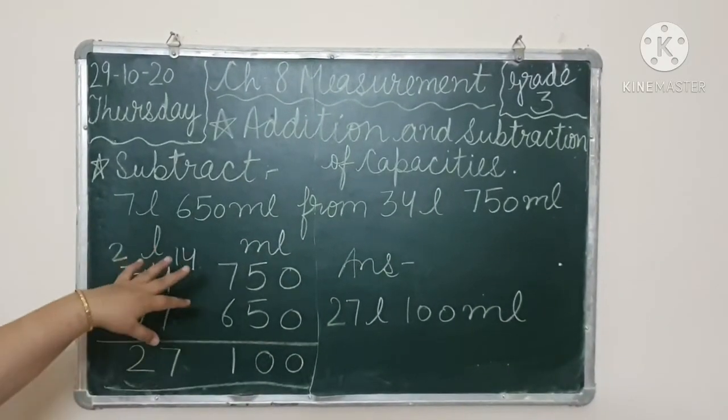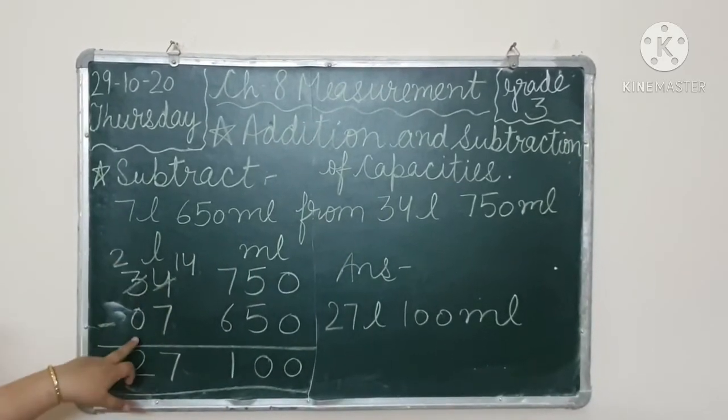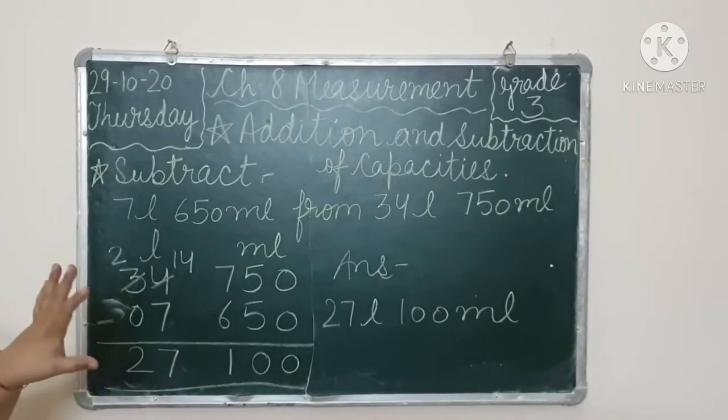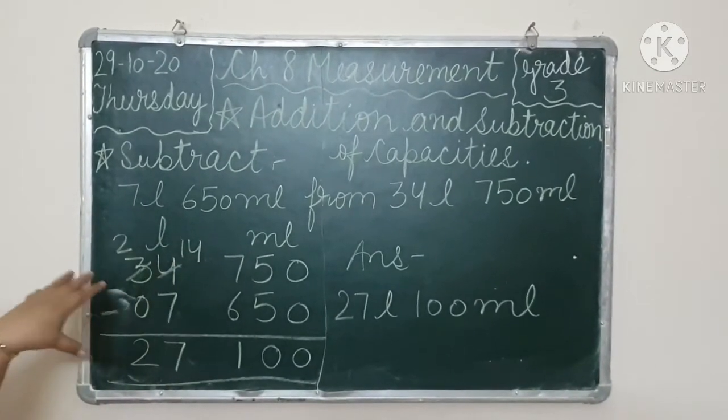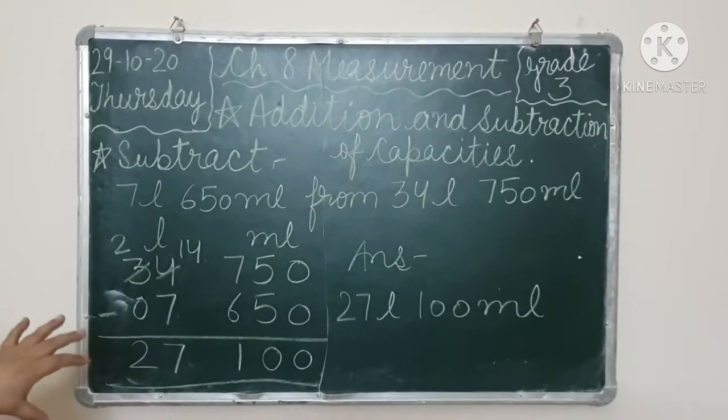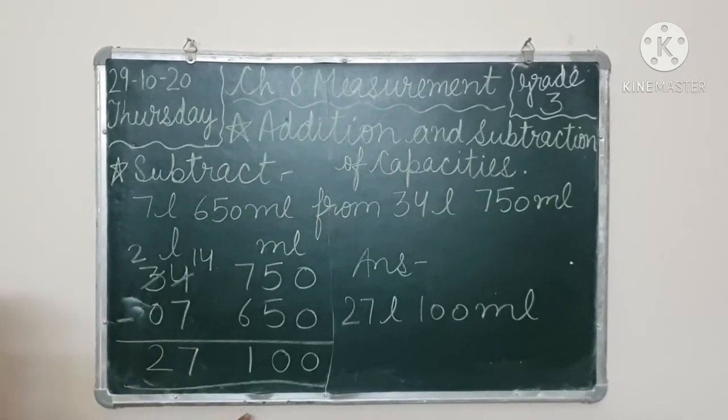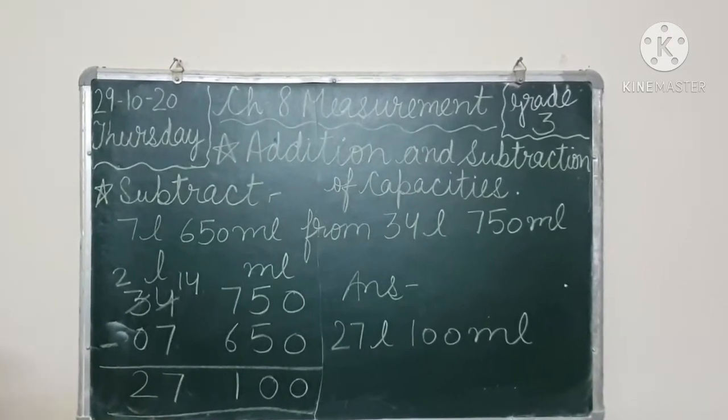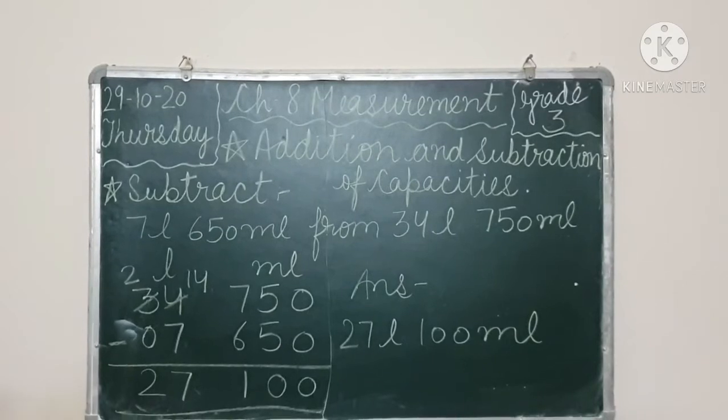Clear? When from is written, we write the second value on top first, then we write the first value. But in subtraction, we also keep in mind that whichever value is bigger, we will write it first, and the small value we will write below. Then liters below liters, milliliter below milliliter. Then we subtract. Then our answer: 27 liter, 100 milliliter.